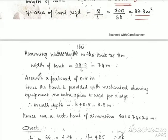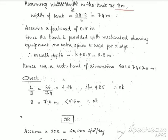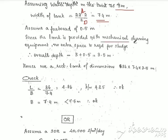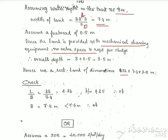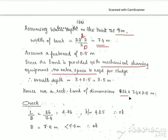We assume depth is 3 meters. Width equals cross-sectional area divided by depth, giving a width of 7.4 meters. Since mechanical cleaning equipment is provided, we add extra depth of 0.5 meters for sludge storage. Adding freeboard, the overall depth is 3.5 meters. So the dimensions are: length 36 meters, width 7.4 meters, overall depth 3.5 meters.